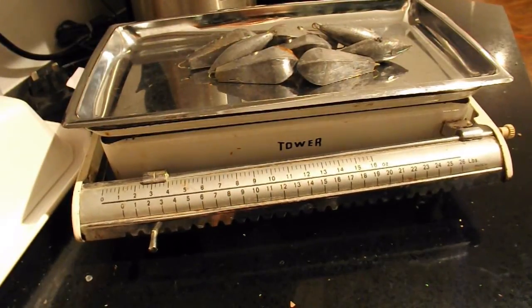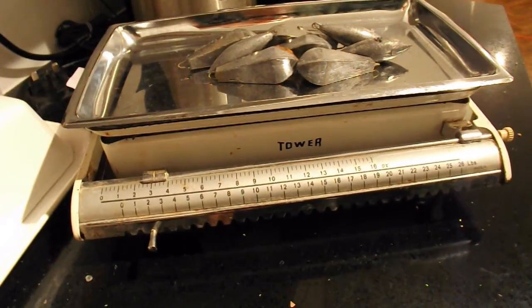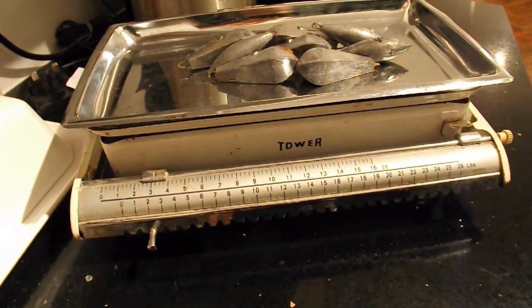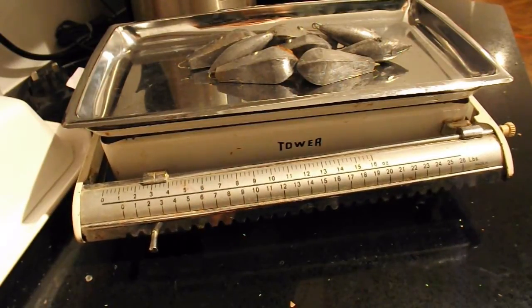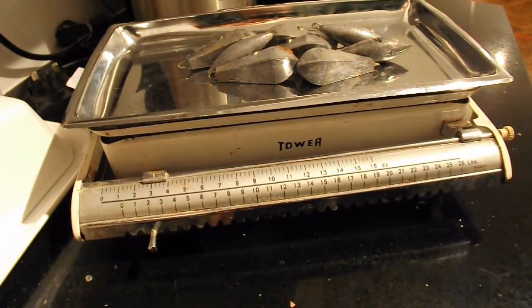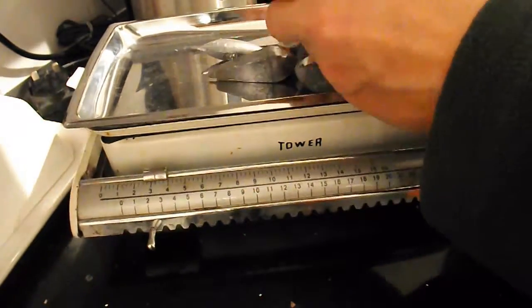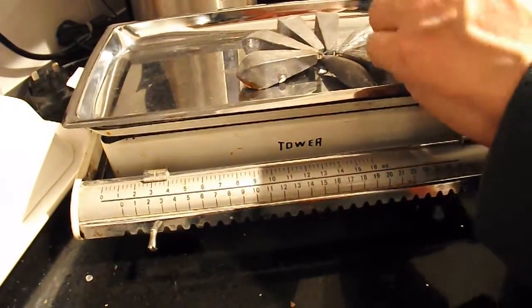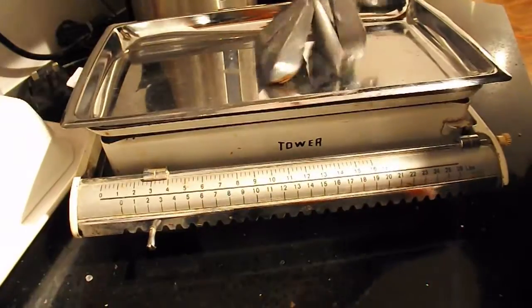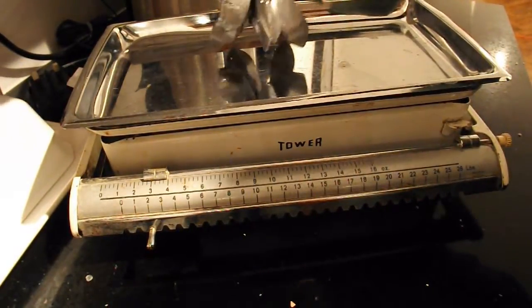So those lead weights add up to one kilogram. I'll tie them to my fishing line and see how we do. The fishing line, I think, is 18 pound brake strain, so that should be more than enough to carry a kilogram. There we go, so that's our kilogram lead weight.